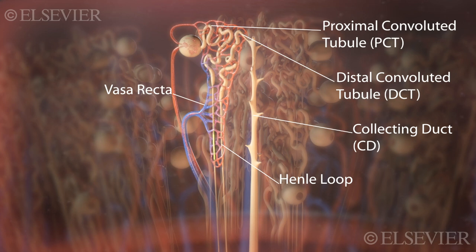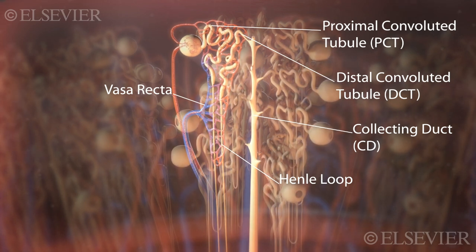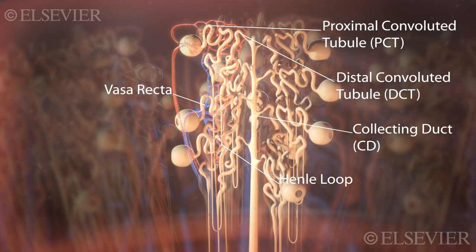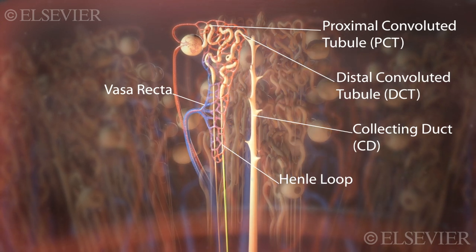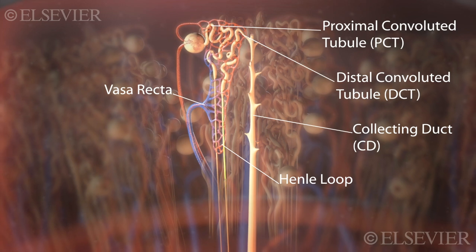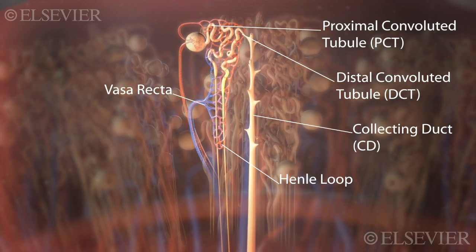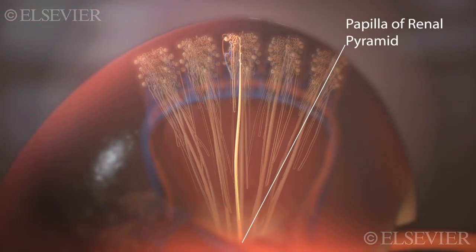The length of the loop of Henle plays a role in how dilute or how concentrated urine is. The DCTs of many nephrons connect to a collecting duct. By the time filtrate reaches the end of the collecting duct, it is fully processed and has become urine. Urine travels from the collecting ducts into the papilla of a renal pyramid.